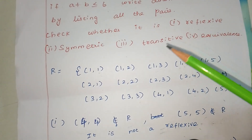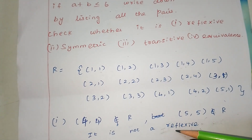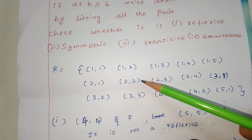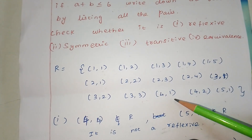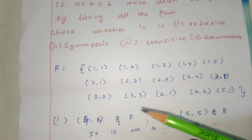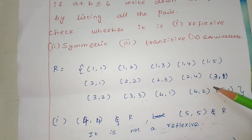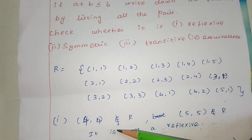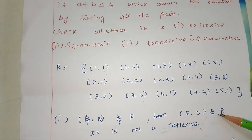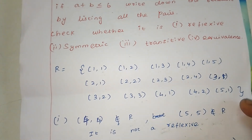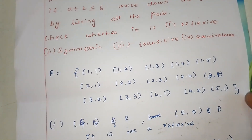Now we check reflexive, symmetric, and transitive. First, reflexive: we need (1,1), (2,2), (3,3), (4,4), (5,5) all to belong to R. But (4,4) is not in R because 4+4=8, which is greater than 6, and (5,5) is also not in R. So it is not reflexive.